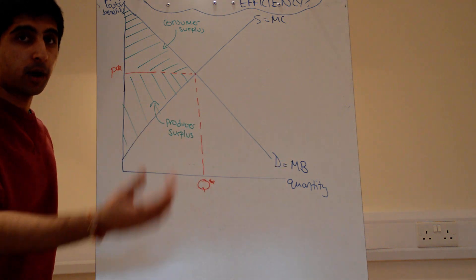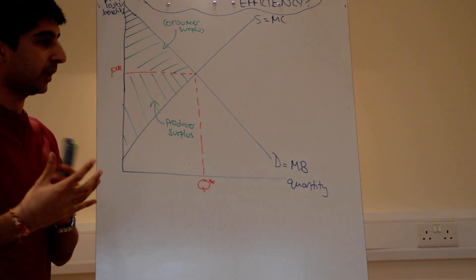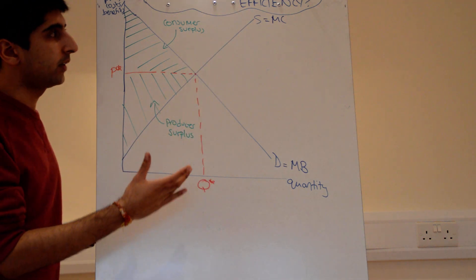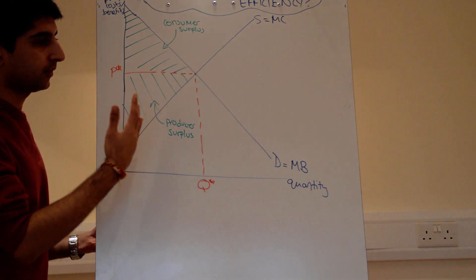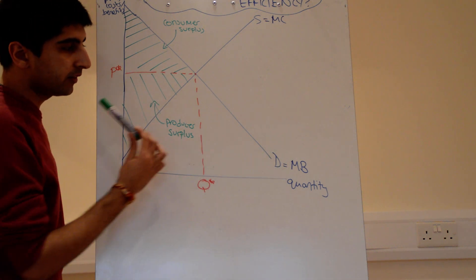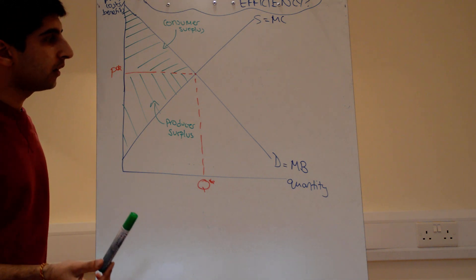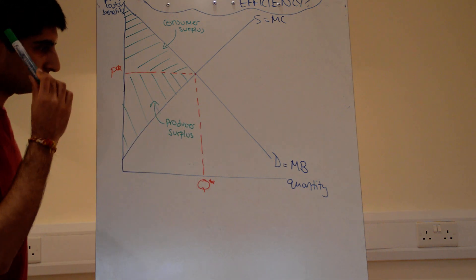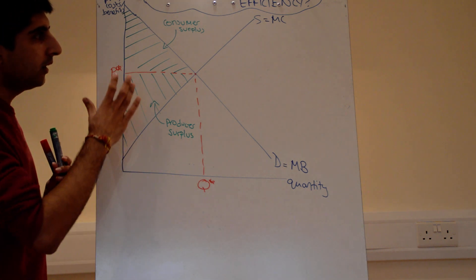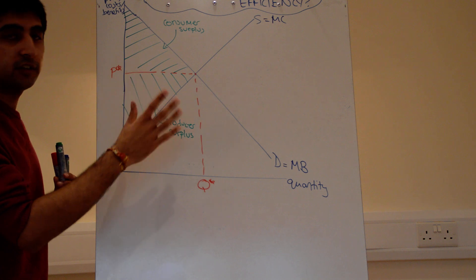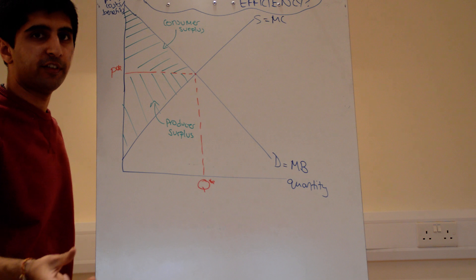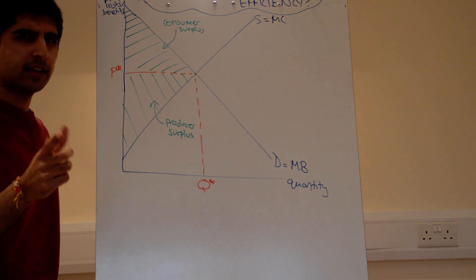So we know that demand is the marginal benefit curve — it tells us the marginal benefit at given prices. We know that the supply curve is also the marginal cost curve — it tells us the marginal cost of producing something at different prices, because prices give us a measure of both utility and cost. Therefore, why does allocative efficiency occur where demand equals supply, i.e., where marginal cost equals marginal benefit?